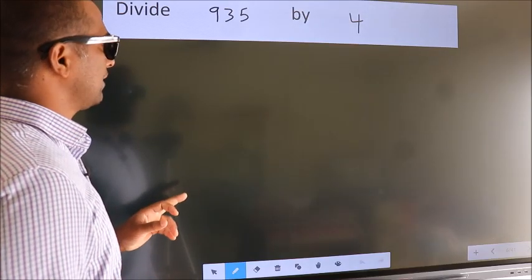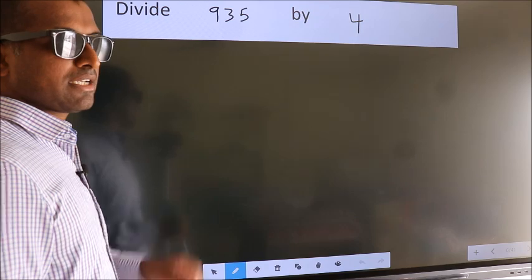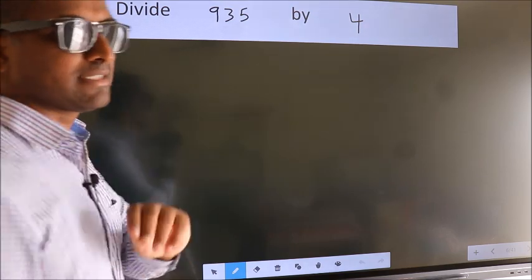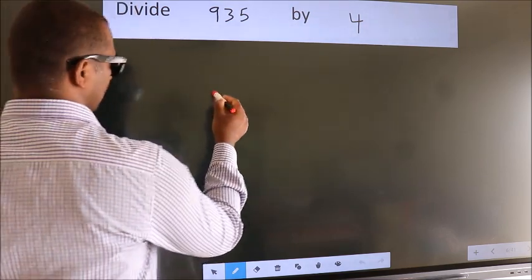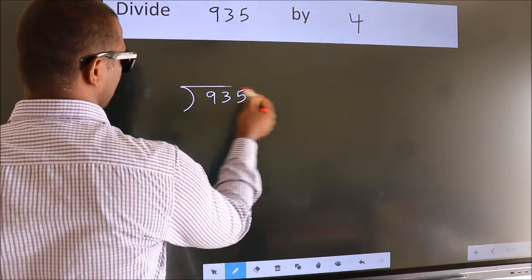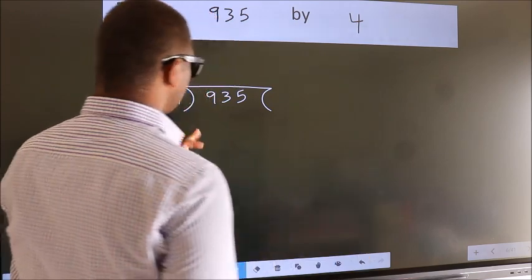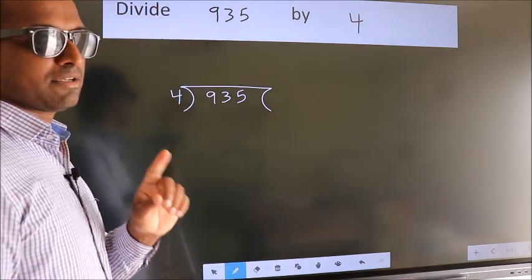Divide 935 by 4. To do this division, we should frame it in this way. 935 here, 4 here. This is your step 1.